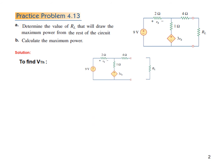The first step is to separate the load. We have separated it and at this terminal we will find the Thevenin voltage. We redraw it with Vth written here and assume a current I in the first loop. Note that in this second loop there is no current flowing because the circuit is not complete, so the current will be zero and the voltage across the 4 ohm resistor will also be zero.